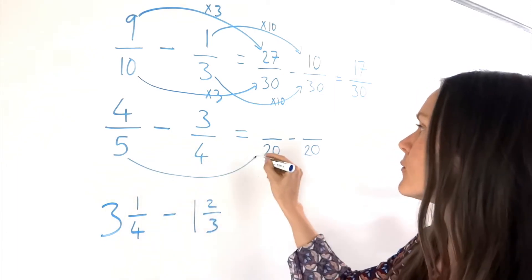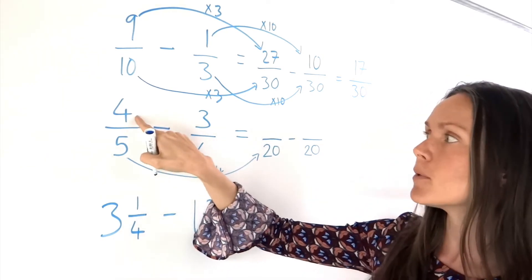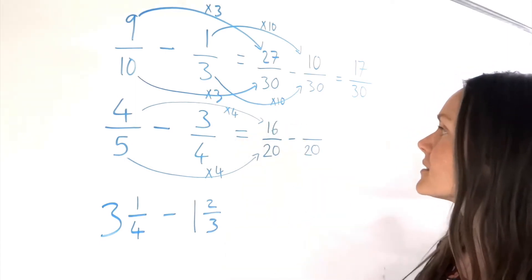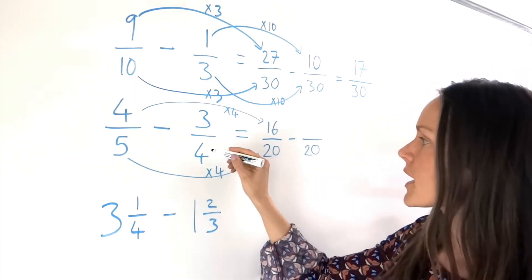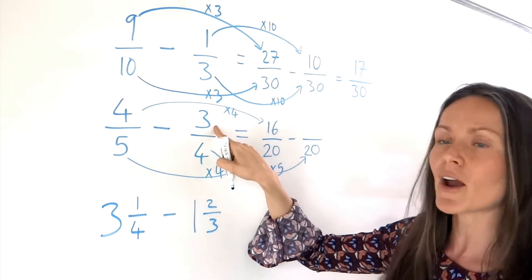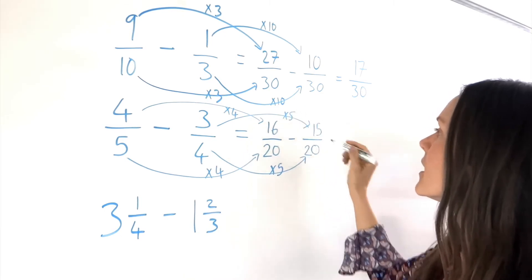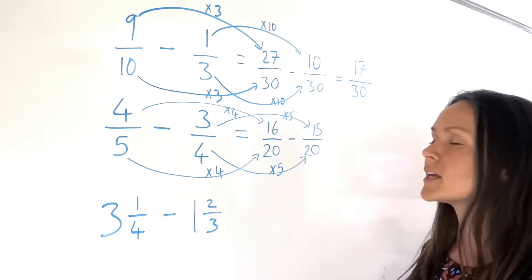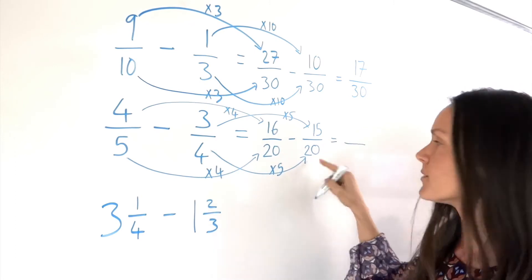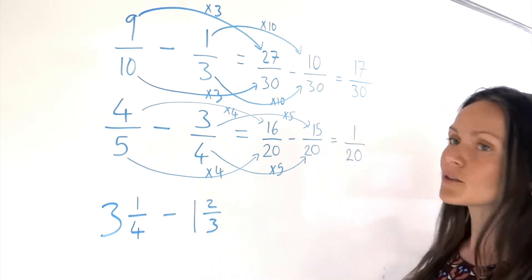To get from 5 to 20, I have to multiply by 4, so I do the same with the numerator — multiply that number by 4 as well. So 4 multiplied by 4 gives me 16. For the second fraction, to get from 4 to 20, I must multiply by 5, so I multiply the numerator by 5 as well. So 3 times 5 is 15. Now that I've got my equivalent fractions with common denominators, the denominator always stays the same and the numerators we subtract. So 16 take away 15 is 1, and that's the final answer.